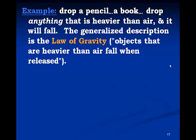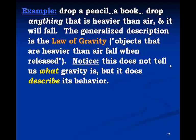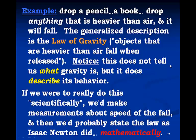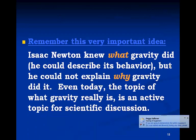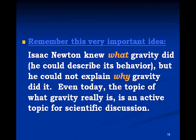For example, if you drop a pencil or a book or drop anything that's heavier than air, it'll fall. This is generalized as the law of gravity. Notice it doesn't tell us what gravity is, but it just simply describes a behavior. Objects fall. If we were to do this scientifically, we'd make measurements about the speed of the fall and state the law as Newton did mathematically. That would be a theory. Isaac Newton knew what gravity did. He could describe it, but he could not explain why gravity did it. Even today, the topic of what gravity really is, is an active topic for scientific discussion.